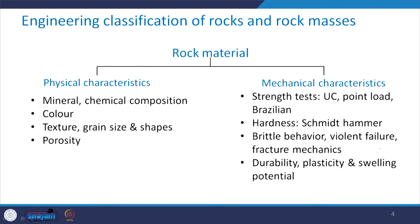Let us take a look at the rock material itself. When I say rock material, I am talking about the intact rock. We have seen that it can have either physical characteristics or mechanical characteristics. In case of physical characteristics, what comes into picture is mineralogical and chemical composition, its color, texture, grain size and shapes, and porosity.